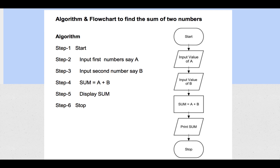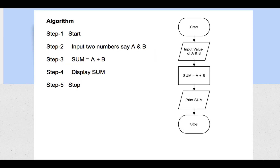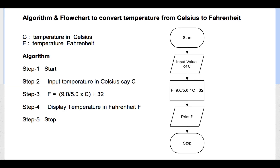In the corresponding flowchart on the right, you have the start symbol, then the input symbol for value A, another input symbol for value B, a processing symbol for sum equals A plus B, then a print symbol for displaying sum, and finally the stop symbol. Alternatively, you can input both A and B at the same time, then compute the sum, print it, and stop.